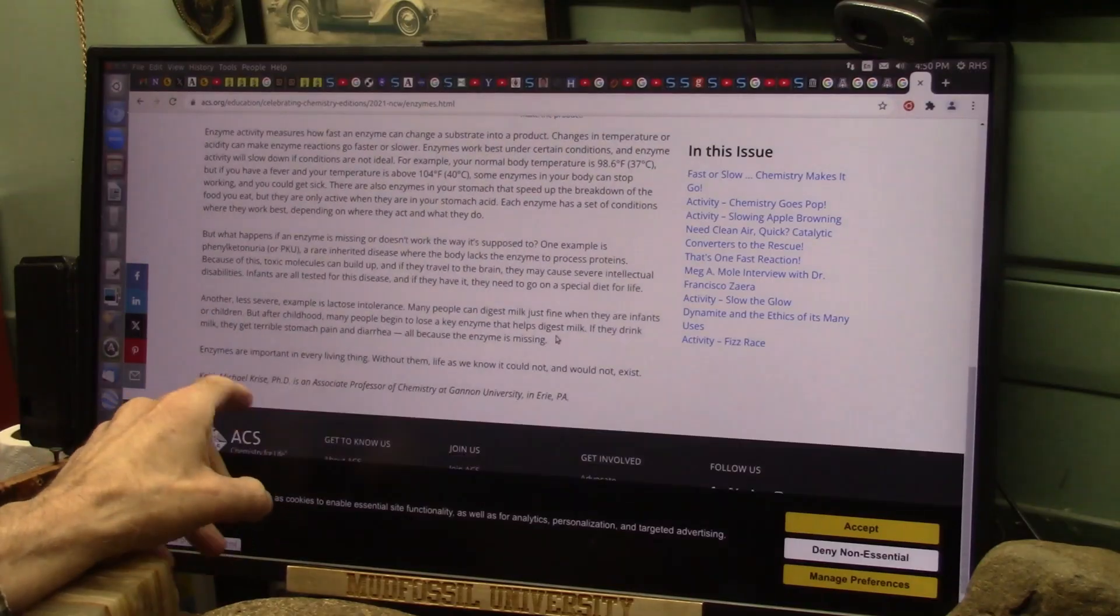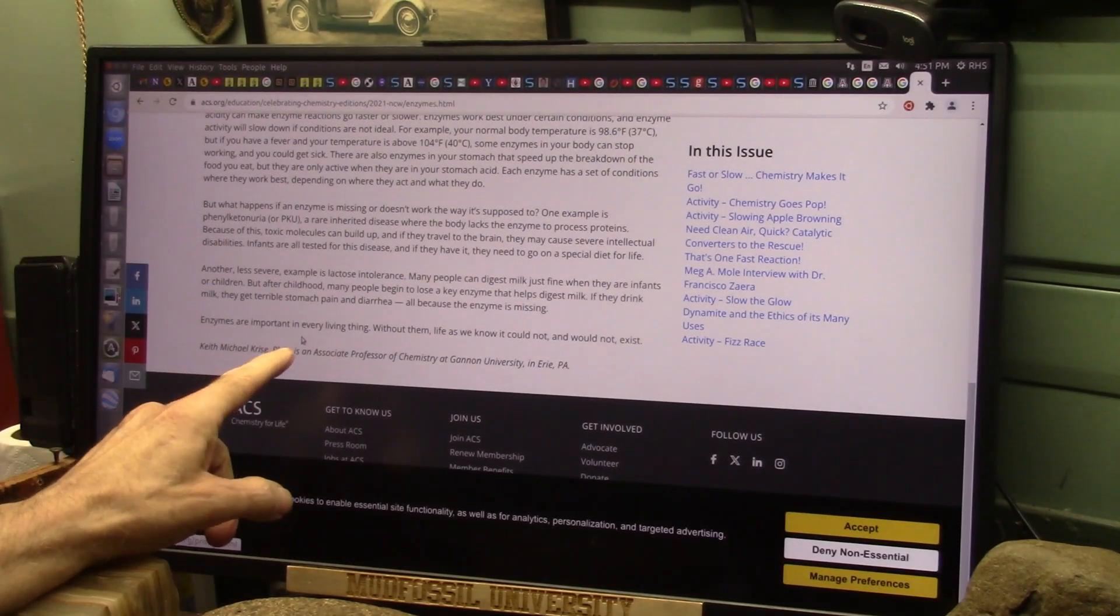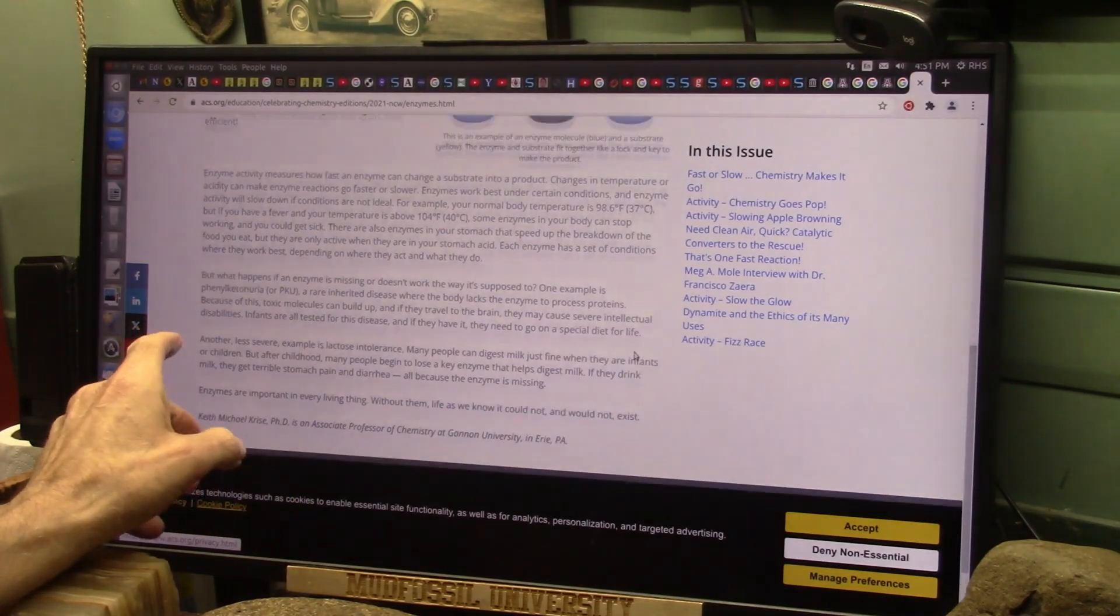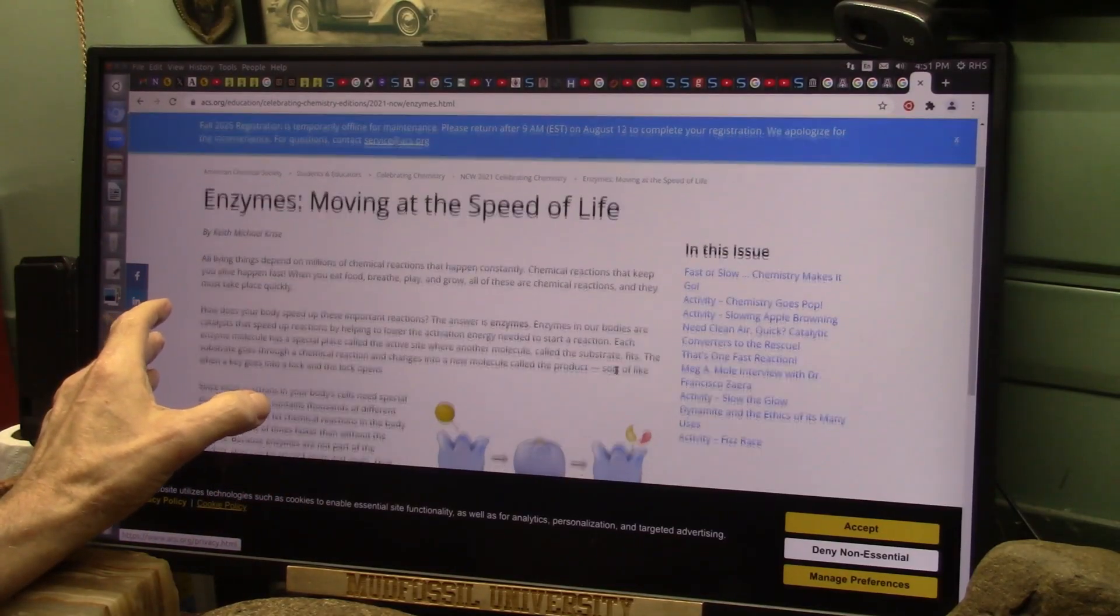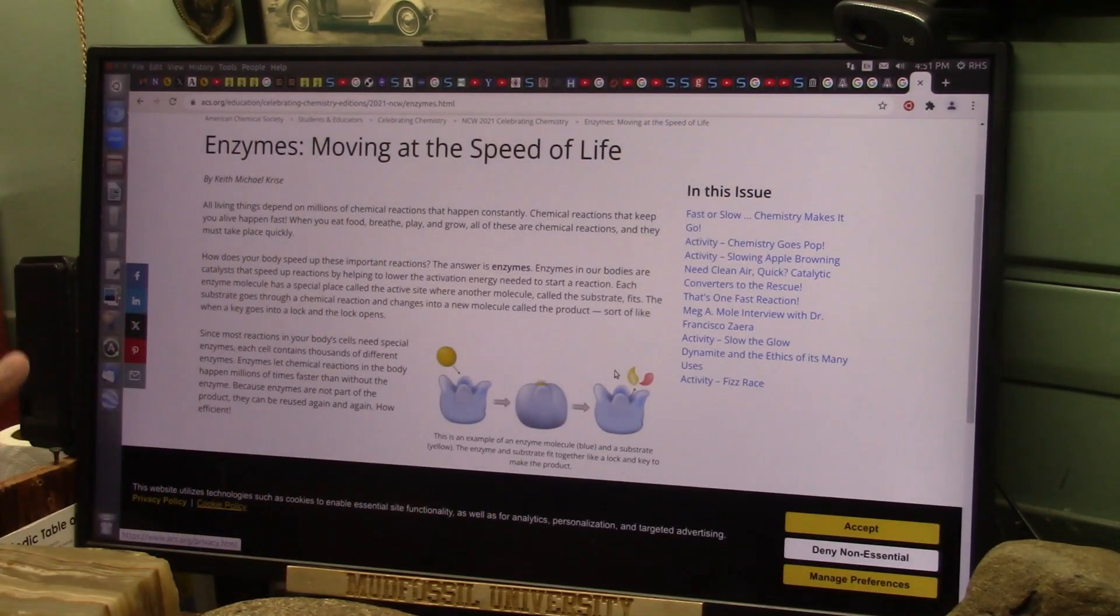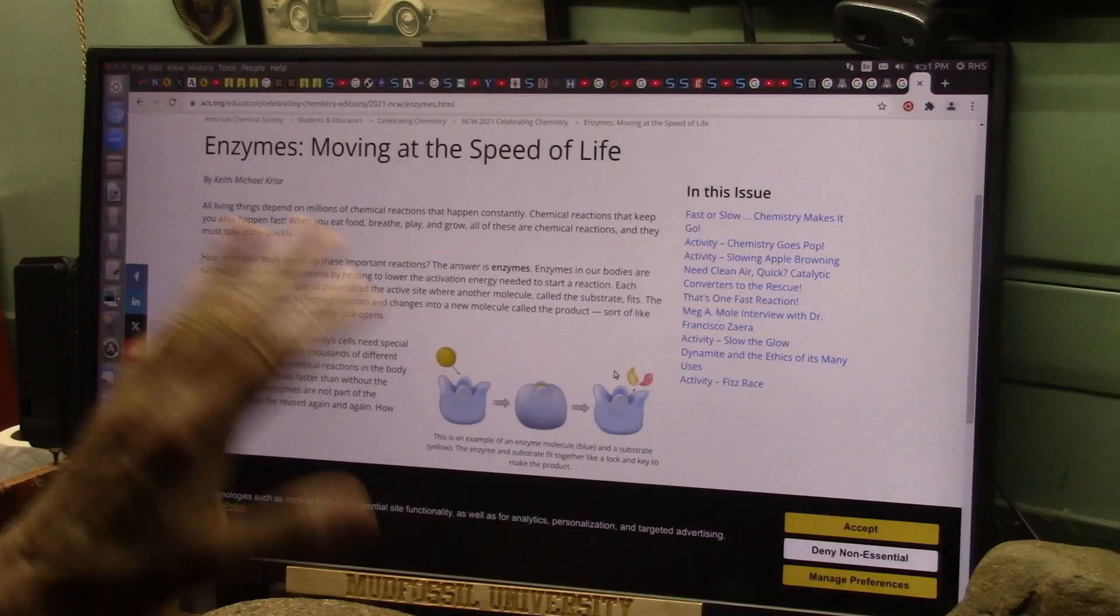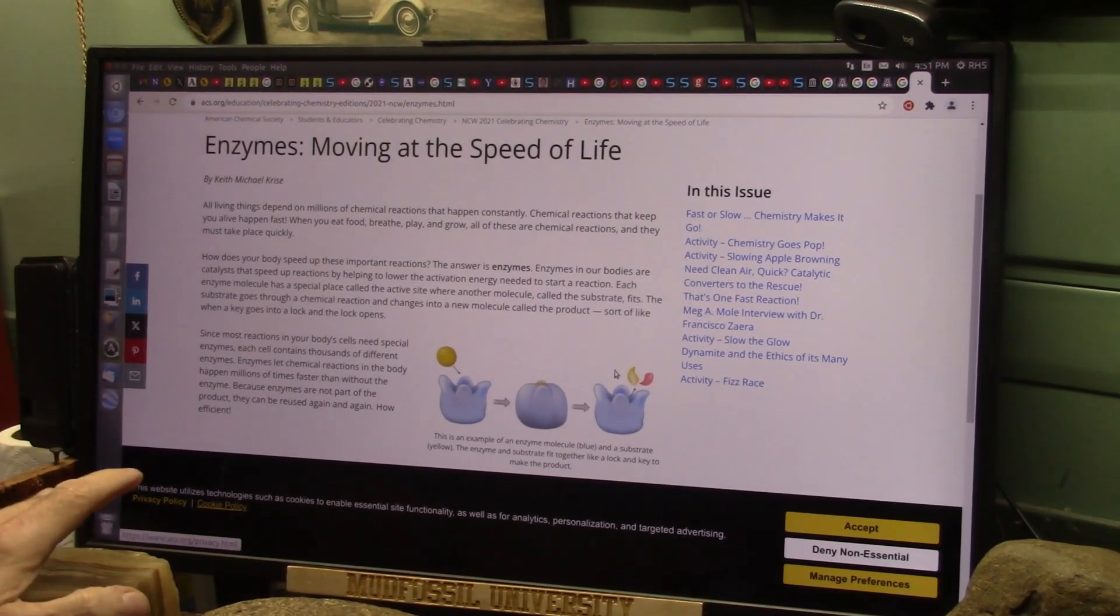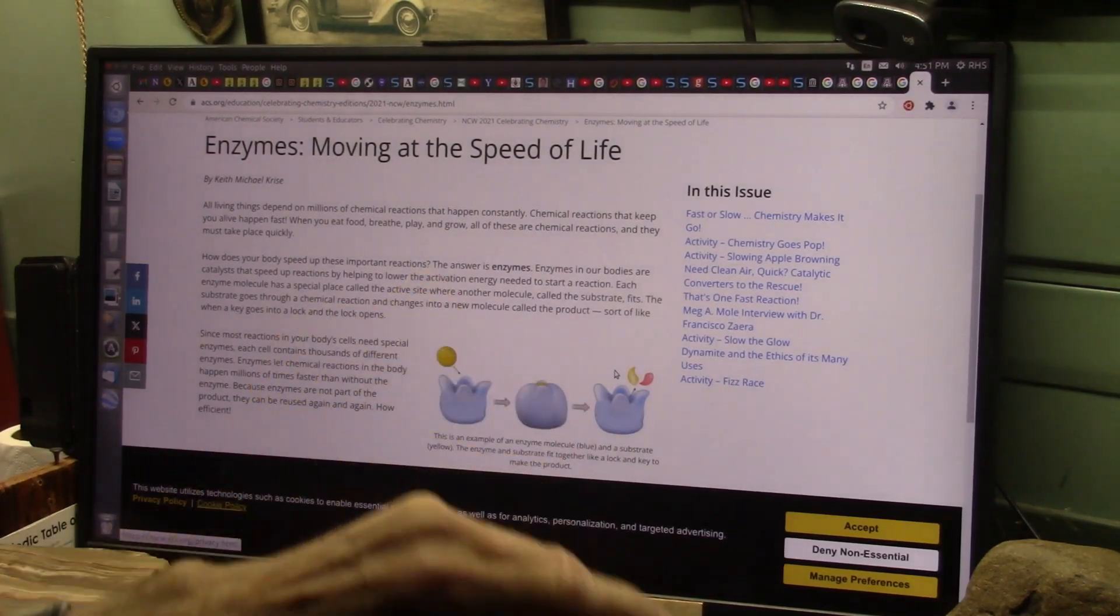Click. Enzymes are important in every living thing. Without them life as we know it could not and would not exist. Enzymes are the key players in life. Without them you're done. And it happens just like lightning, it's click, it's a magnetic click, click, done. And the enzymes don't get used up. They click and blow a bunch of things away, and then they go down and click again.